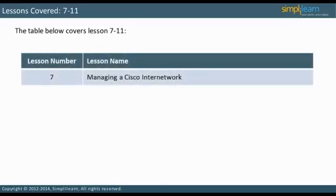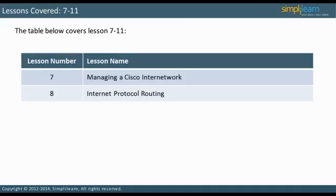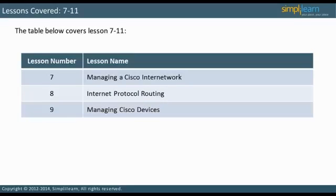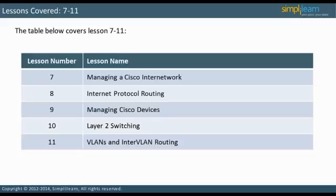Lesson 7 will describe how to manage a Cisco Internetwork, including network architecture. Lesson 8 will address Internet Protocol routing, including static and default routes. Lesson 9 will deal with managing Cisco devices, including hardware components and remote access. Lesson 10 will address Layer 2 switching. In Lesson 11, VLANs and inter-VLAN routing will be discussed.